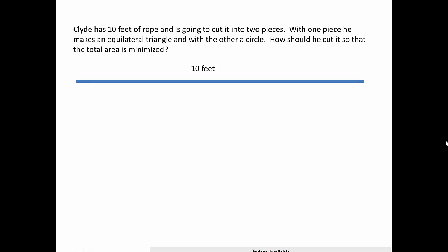Here's another optimization problem. We've got a 10-foot piece of rope we're going to cut it into two pieces, and one makes an equilateral triangle and the other a circle. Let's say the first makes the circle, the second makes the equilateral triangle. How should he cut it so the total area is minimized?